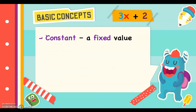Next, we have constant. A constant is a fixed value or a lone number in the expression or equation. So in 3x plus 2, the number 2 is the constant. It is a known number — any real number with no variable beside it, just the number itself.